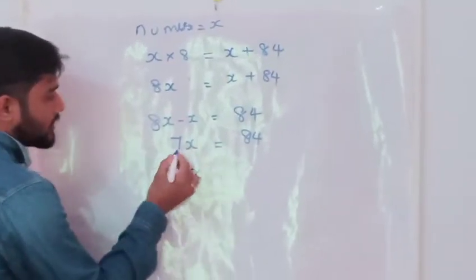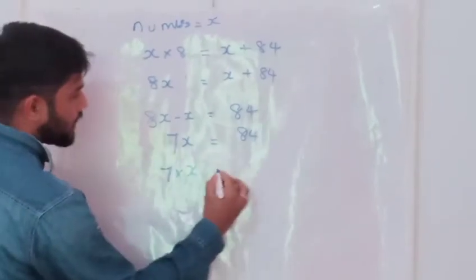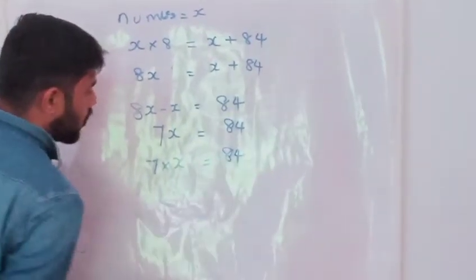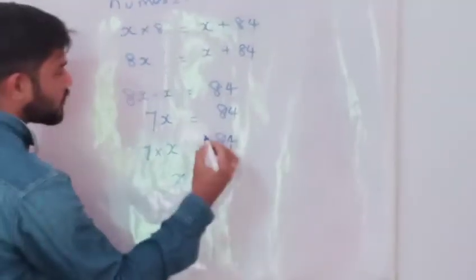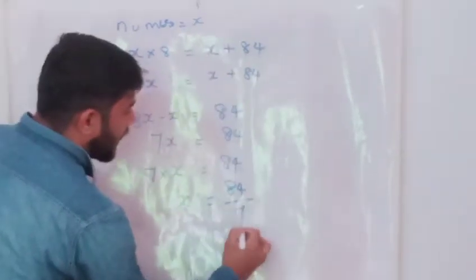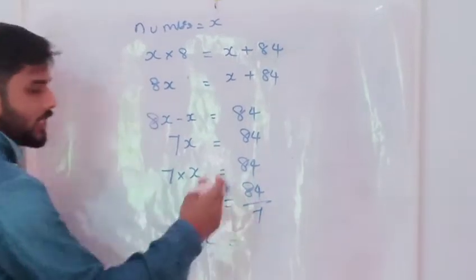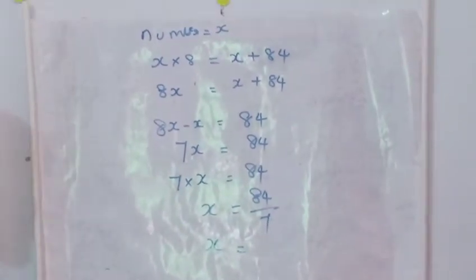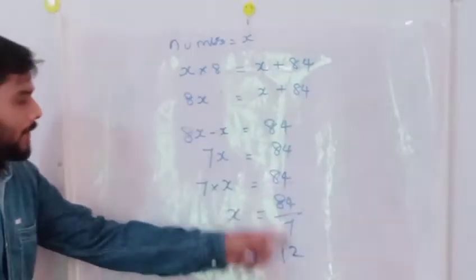So 7x means 7 into x, which is equal to 84. I am taking this 7 from the left-hand side to the right-hand side, so x equals 84 divided by 7. We will get 12. The answer will be 84 divided by 7, which is 12.